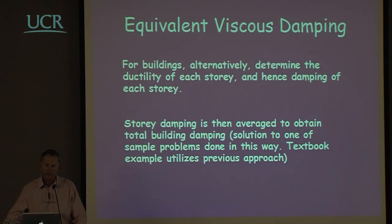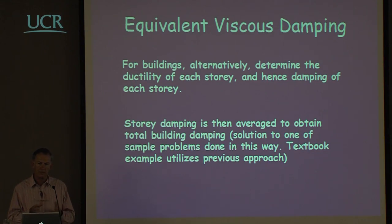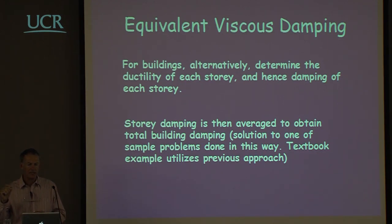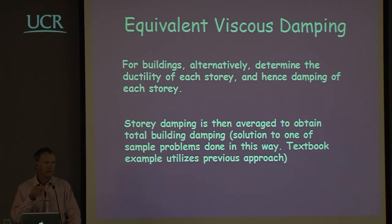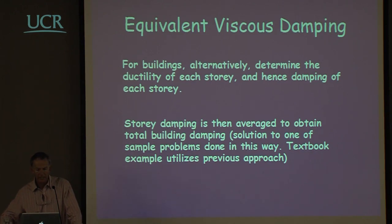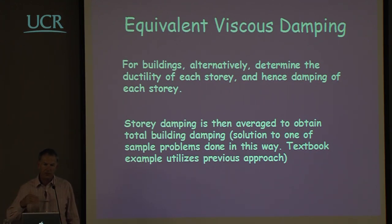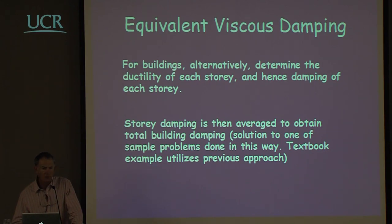The equivalent viscous damping can be calculated by different procedures. One approach uses the equivalent single degree of freedom structure, calculating the yield displacement at the characteristic height and the design displacement at that same height, giving a single structural ductility value. In some cases it may be better to do it storey by storey. For buildings we can weight the individual damping of each storey by the shear force and displacement of each storey — a more complex approach, but examples are shown in the textbook.